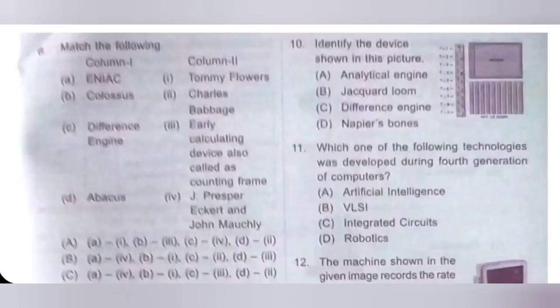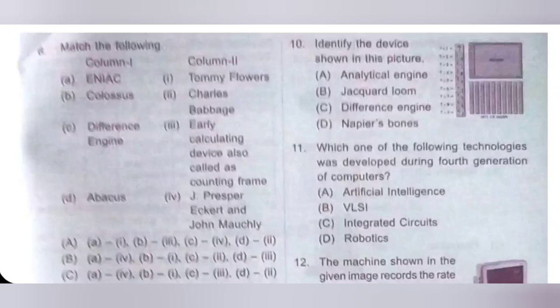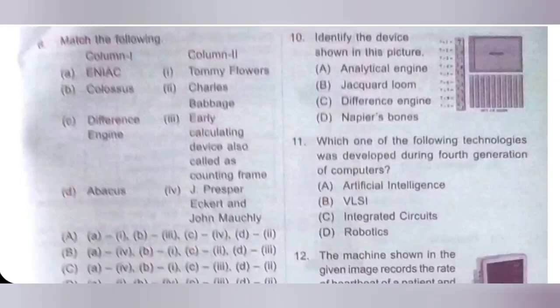6th question: Match the following. A. ENIAC — developed by J. Presper Eckert and John Mauchly, so A4. B. Colossus — developed by Tommy Flowers, so B1. C. Difference Engine — developed by Charles Babbage, so C2. D. Abacus — the early calculating device, also called a counting frame, so D3. The matching is A4, B1, C2, D3. Option B is the correct answer.